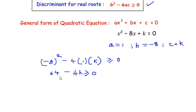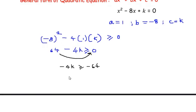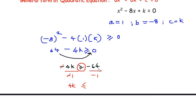Now let us send 64 to the other side: -4k ≥ -64. Since k has a negative coefficient, we divide both sides by -1. Remember: when you divide both sides by a negative number, the inequality sign flips — greater than or equal to becomes less than or equal to. So the negatives cancel and we get 4k ≤ 64.